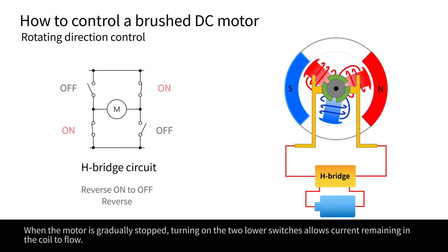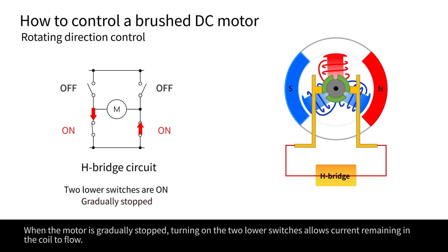When the motor is gradually stopped, turning on the two lower switches allows current remaining in the coil to flow.